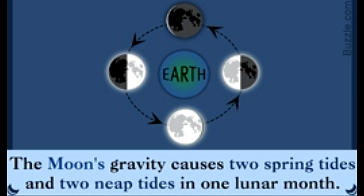This doesn't refer to high tide and low tide, but rather the average size of the waves during that period. Waves are the largest during a spring tide, and smallest during a neap tide. The deviation from average is about 20% either way.